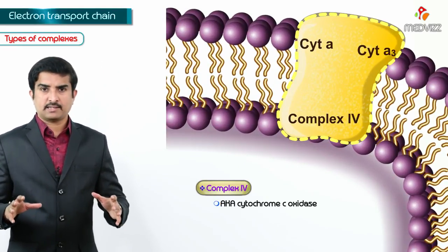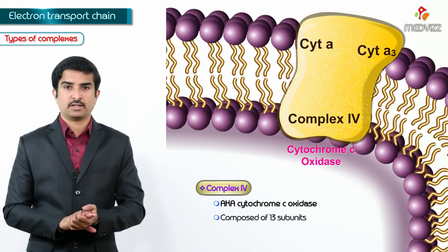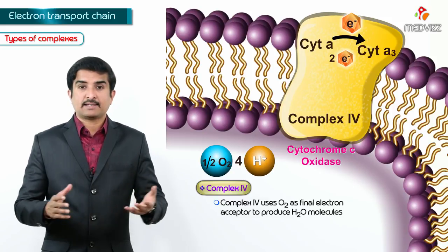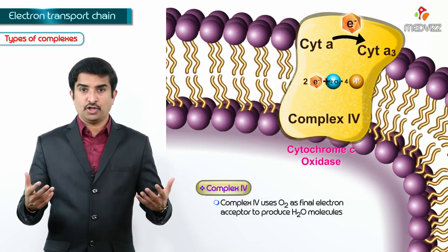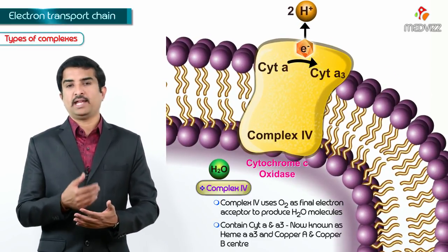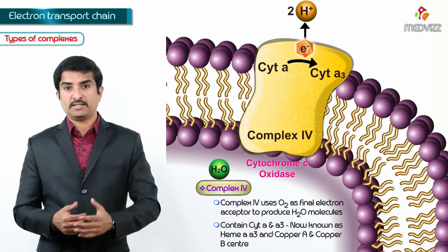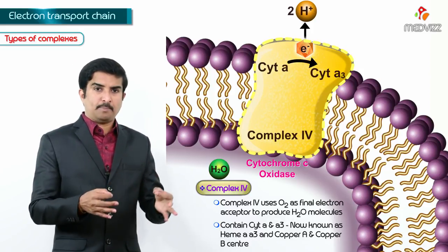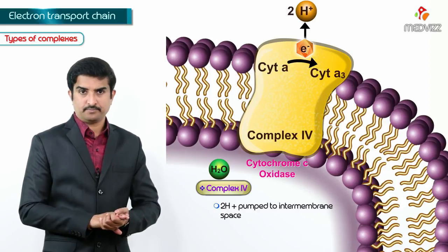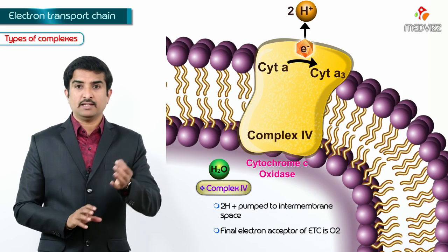Complex 4, called cytochrome C oxidase, is composed of 13 subunits, three of which are of mitochondrial origin. It uses oxygen as the final electron acceptor to produce water molecules. Complex 4 contains cytochrome A and A3 (now known as heme AA3) and copper A and copper B centers. It pumps 2 hydrogen ions into the intermembrane space. The final electron acceptor of the electron transport chain is oxygen.